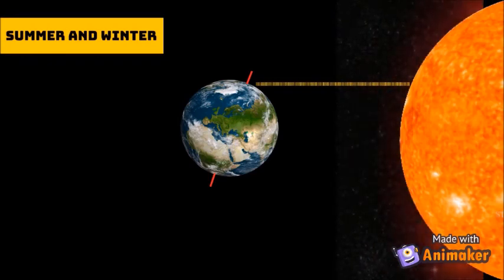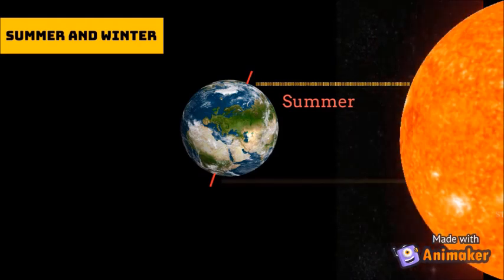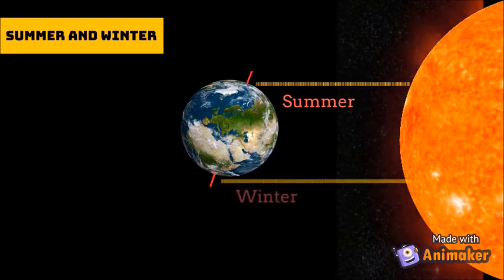When it is winter where you live, your part of Earth is tilted away from the sun.